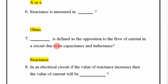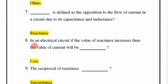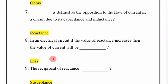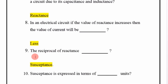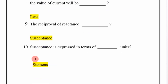In an electrical circuit, if the value of reactance increases, the value of current will decrease. The reciprocal of reactance is susceptance.